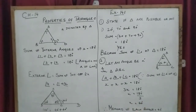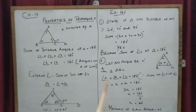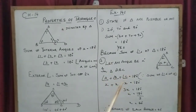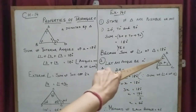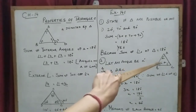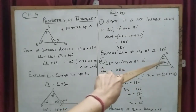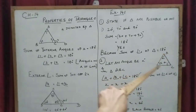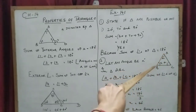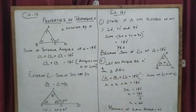Therefore the measure of each angle is 60 degrees. To check if the answer is correct, we verify: 60 plus 60 is 120, plus 60 is 180. Since the sum of the three angles equals 180 degrees, the answer is correct.